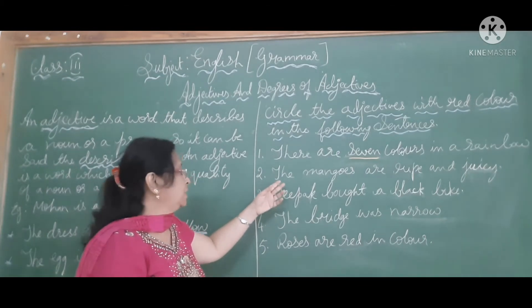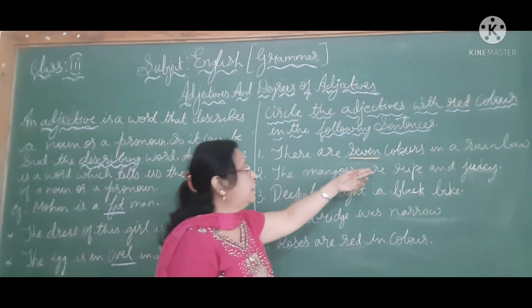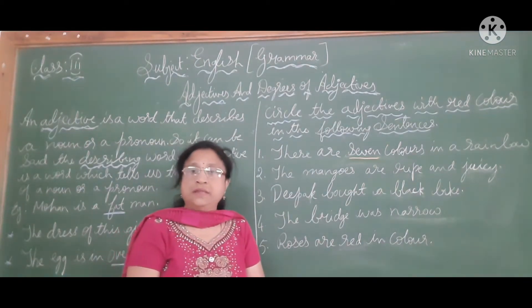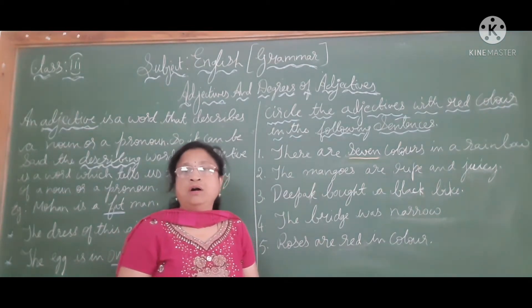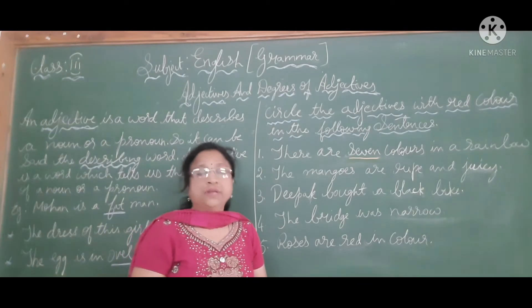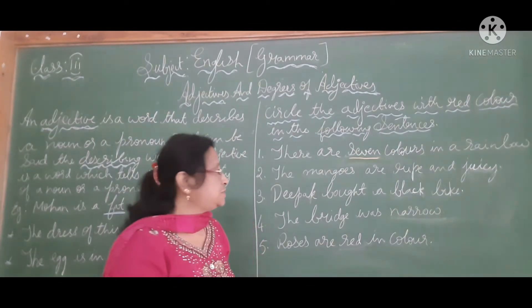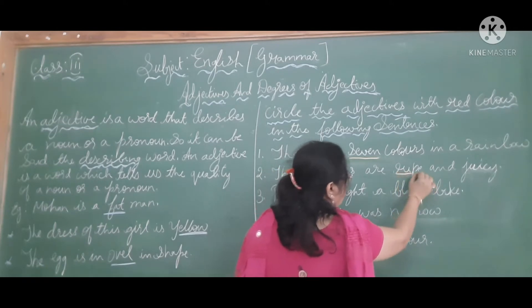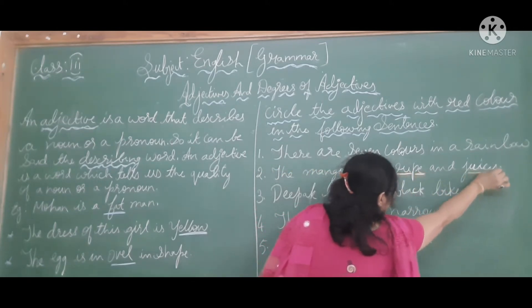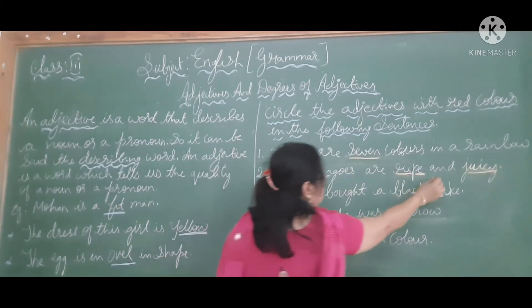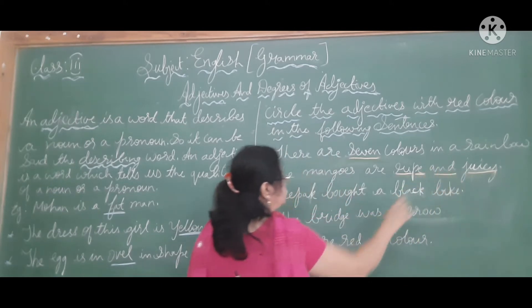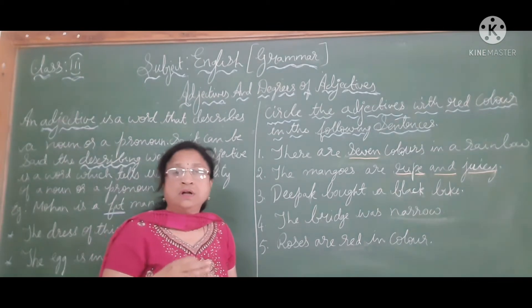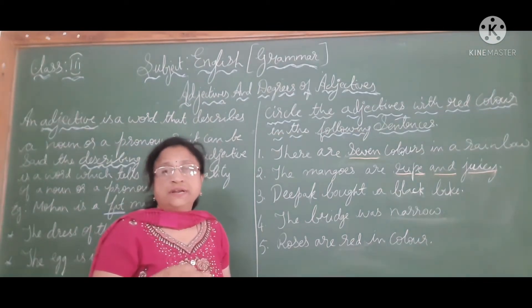The second sentence: the mangoes are ripe and juicy. How about the mangoes? They are ripe and juicy. These are the adjectives. Ripe and juicy are adjectives describing more about a fruit, that is mango.